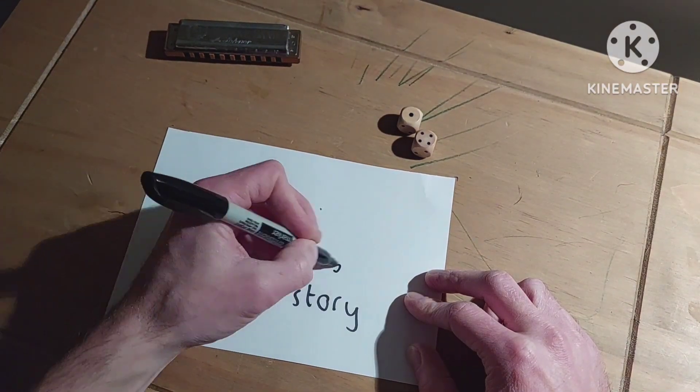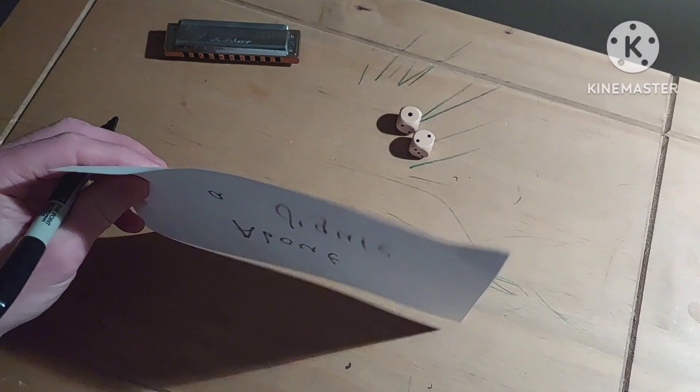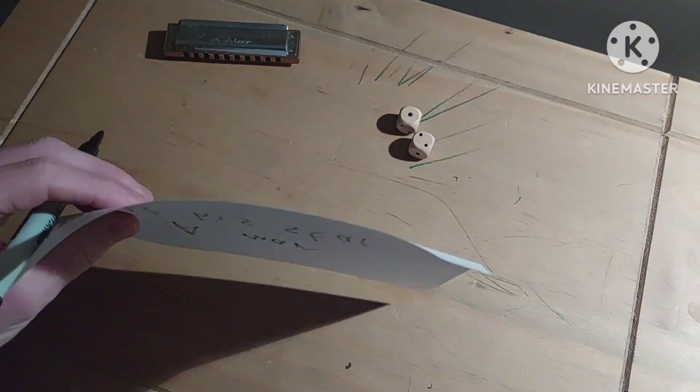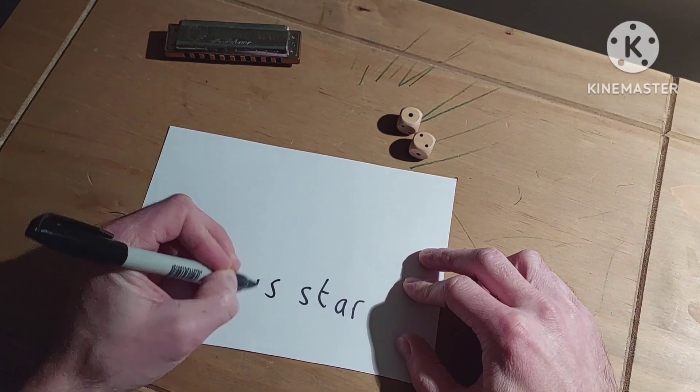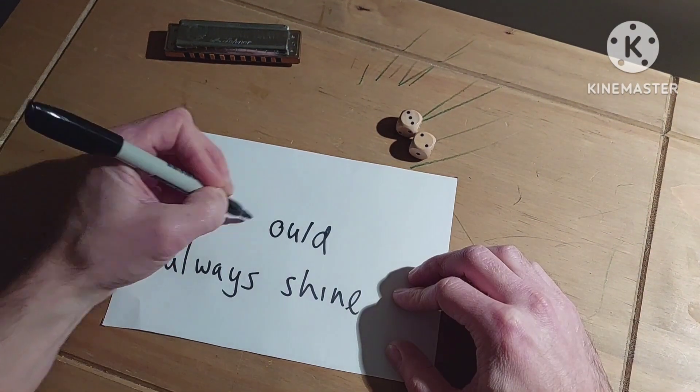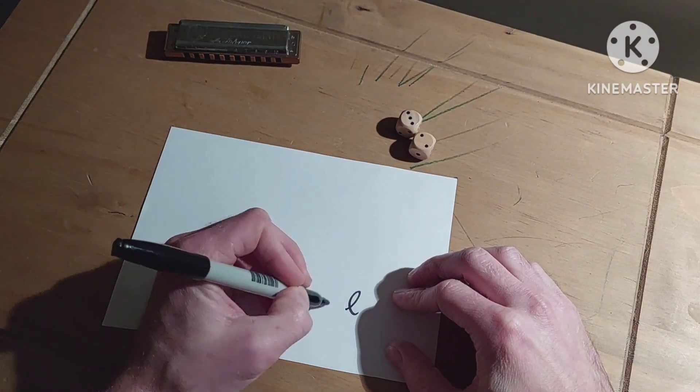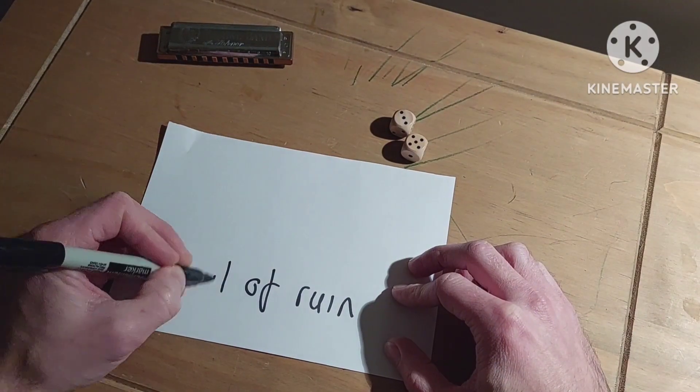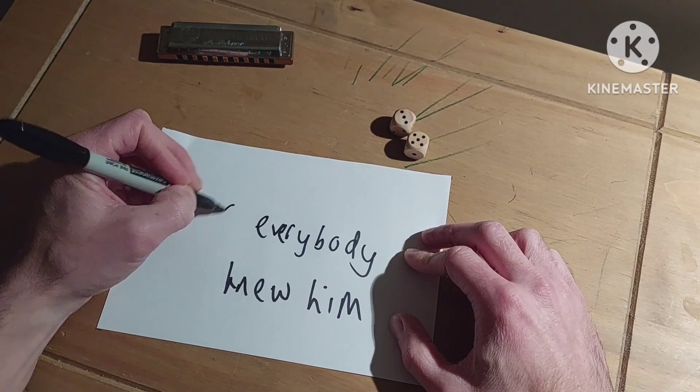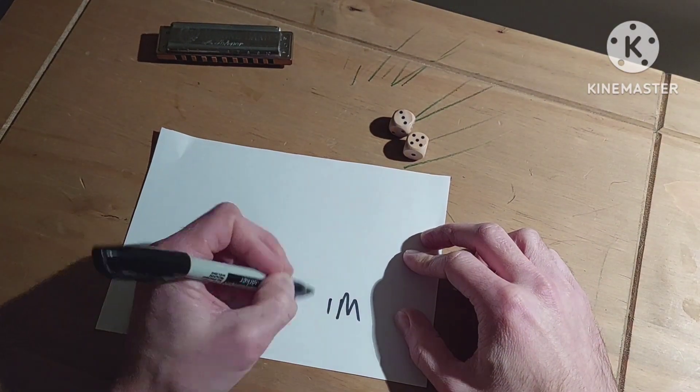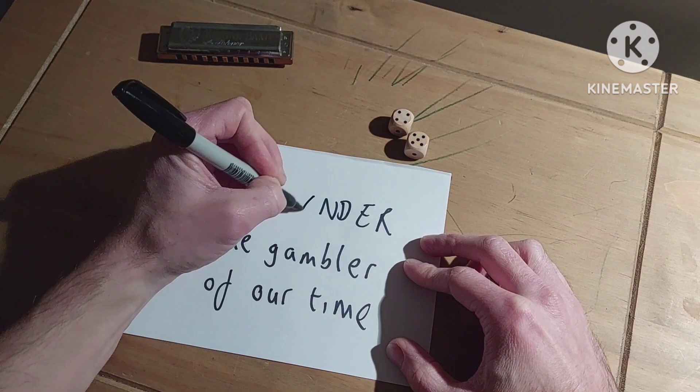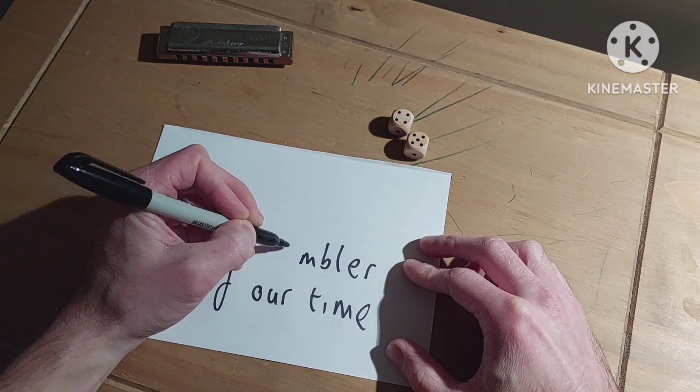I'd like to tell a story about a tragic figure, a man who thought his star would always shine. He left a trail of ruin and everybody knew him as Alexander, the gambler of our time.